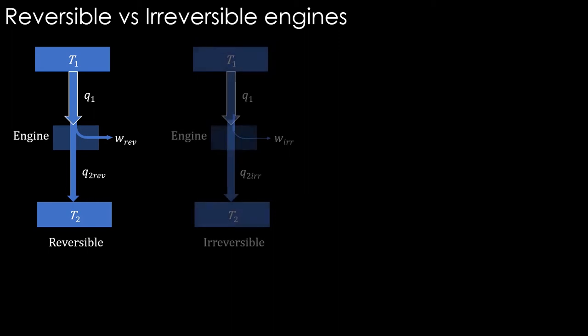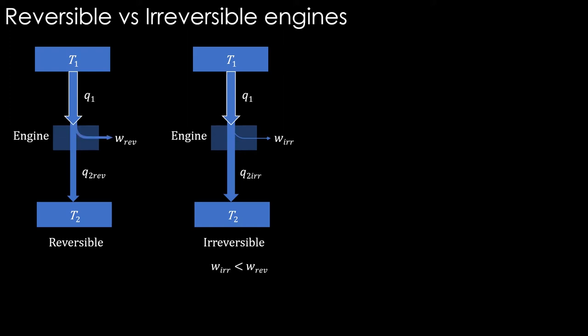Let's have two engines operating between the same temperatures — one operating in a reversible cycle and the other using an irreversible cycle. The irreversible cycle does lower work compared to the reversible one, so W irreversible is lower than W reversible. Therefore, the irreversible cycle rejects more heat: q2 irreversible is greater than q2 reversible. From the body at temperature T1, both engines take equal amount of heat q1, so q1 divided by T1 is the same for both engines.